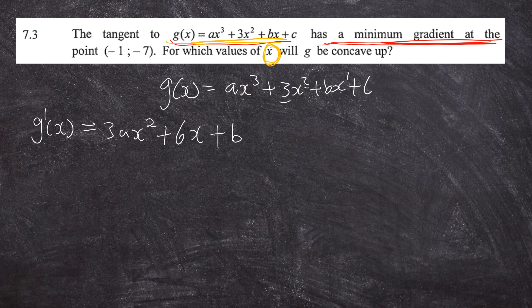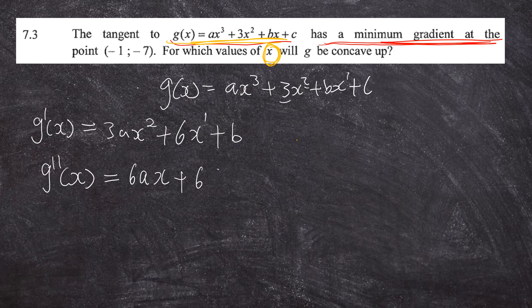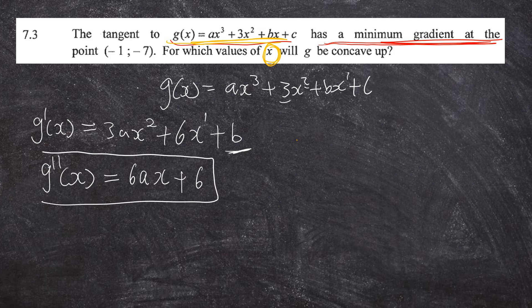To get the point of inflection — where the graph changes its concavity from concave down to concave up or vice versa — we need the second derivative. Differentiating again: 3a times 2 gives 6a x, and 6 times 1 gives 6. The derivative of b, a constant, is 0. So the second derivative is g″(x) = 6ax + 6.